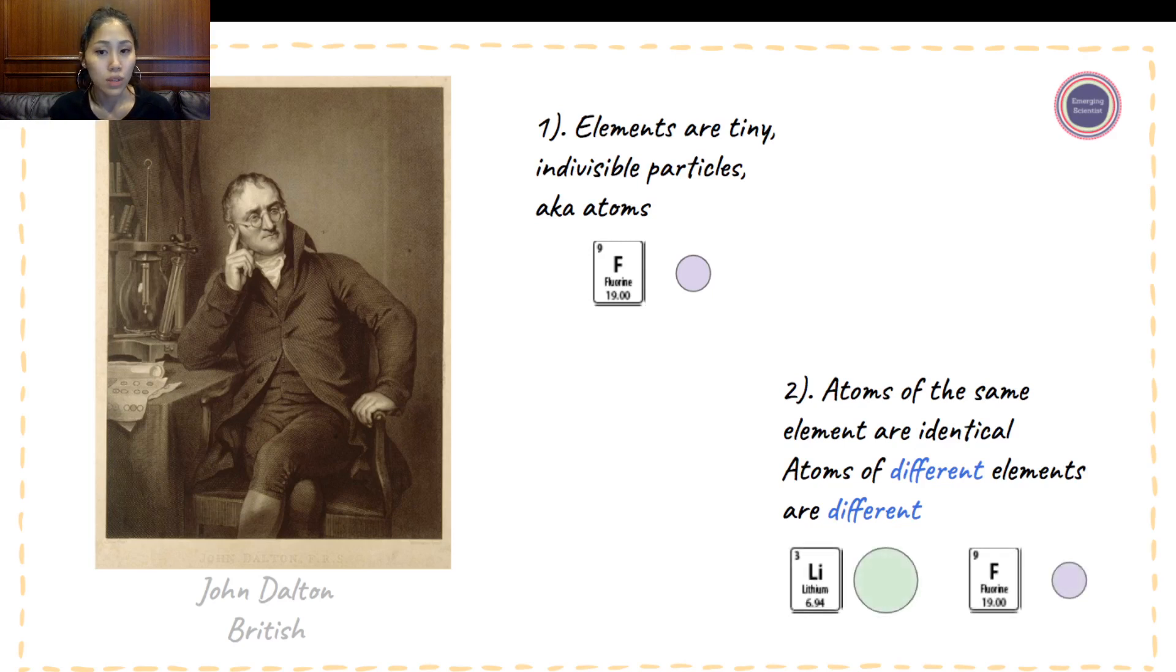So what Dalton is saying here is that a lithium atom is clearly different from a fluorine atom. They're not the same element. So only if they are both fluorine, then the atoms would be identical. But if the elements are not the same, clearly the element of the atoms will not be the same either.